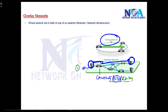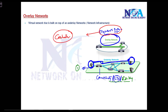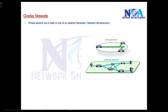The overlay network can be described as a dynamic path that is programmed by the controller. The controller decides which path to use and instructs the devices — or shares requirements with them — depending on which model you implement. Based on those instructions or requirements, a specific path is used, and that dynamic path programmed by the controller is what we call the virtual network or overlay network.